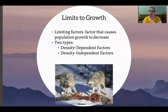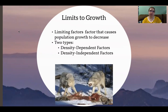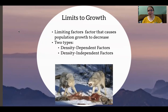The first thing we want to mention is limiting factors. Limiting factors are factors that cause population growth to decrease — they slow down the growth of a population, or instead of growing, they can make it go negative, meaning the population decreases in size each year. There are two categories: density-dependent factors and density-independent factors.